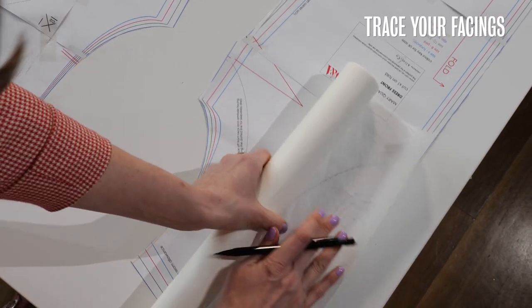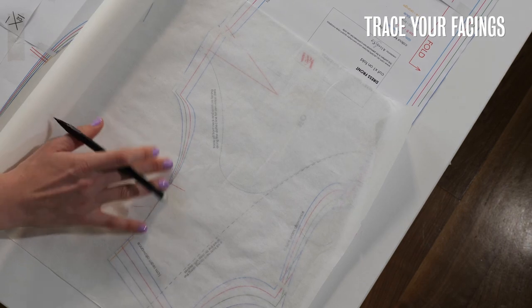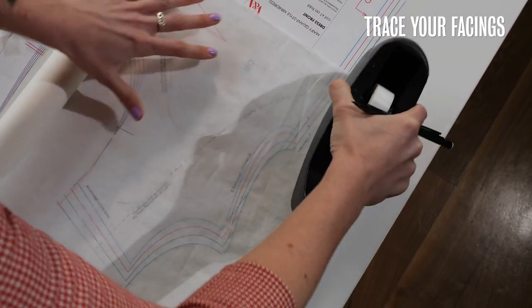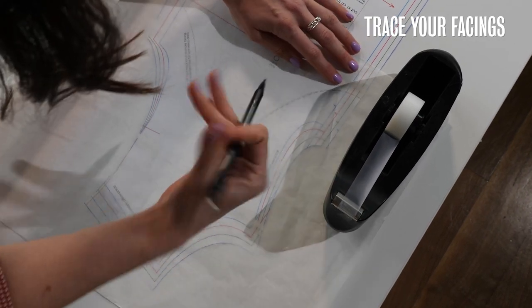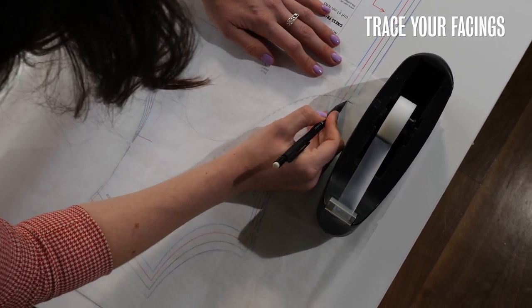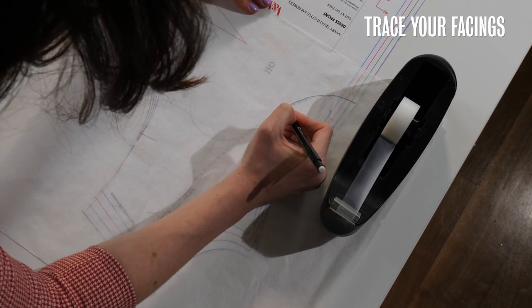So to trace off the facing we just need to take our tracing paper here and something like sellotape will help to hold that. And then I just want to carefully trace along the dotted line.